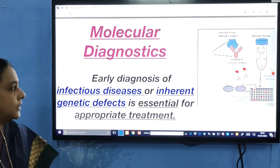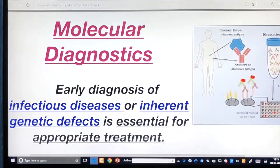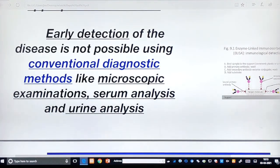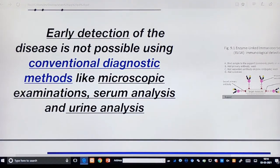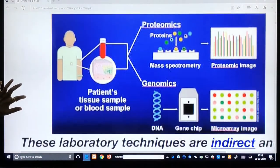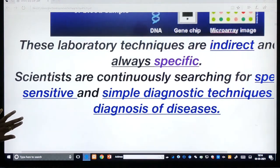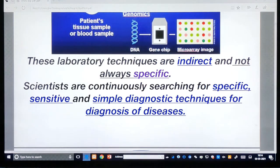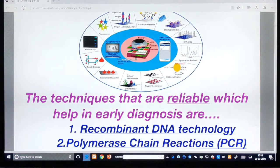Molecular diagnostics: early diagnosis of infectious disease or inherited genetic defects is essential for appropriate treatment. Early detection of disease is not possible using conventional diagnostic methods like microscopic examinations, serum analysis, and urine analysis. So we need something better — laboratory techniques that are supposed to be indirect and always specific. Scientists are continuously searching for specific, sensitive, and simple diagnostic techniques.